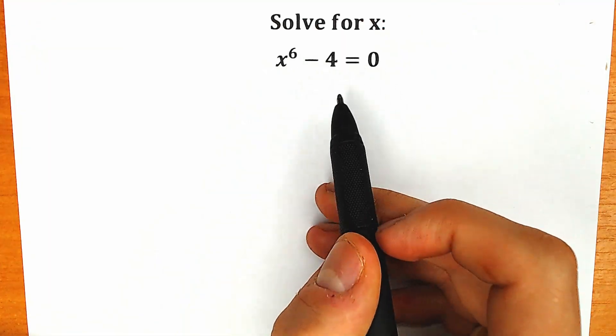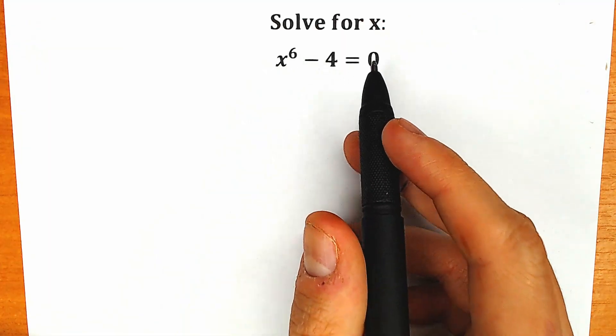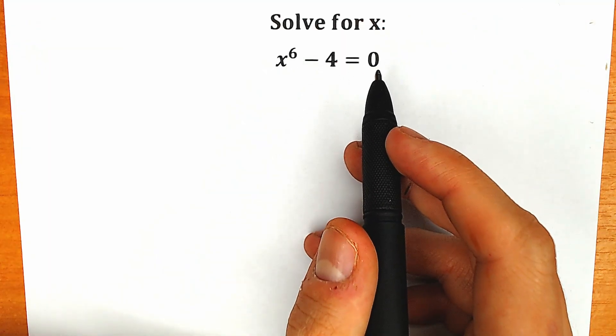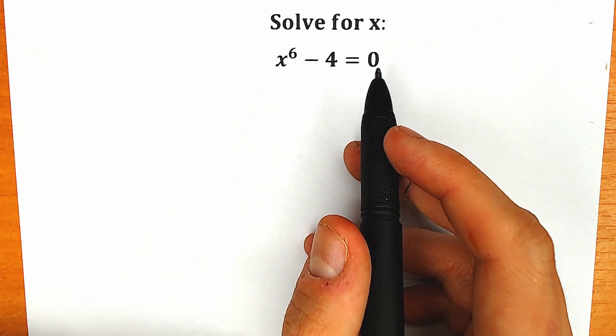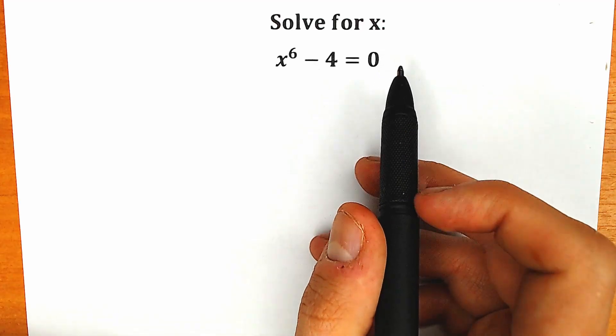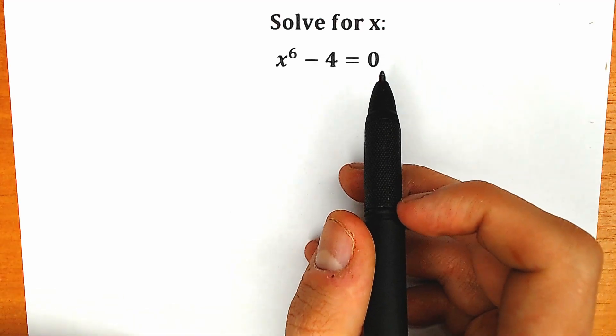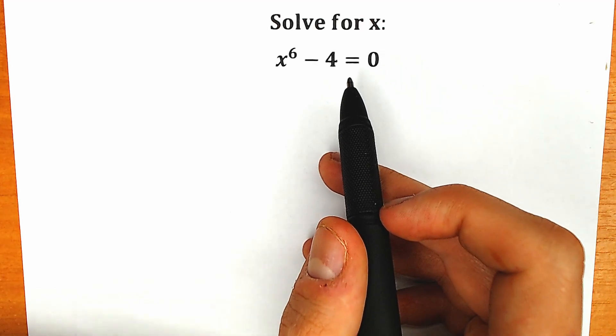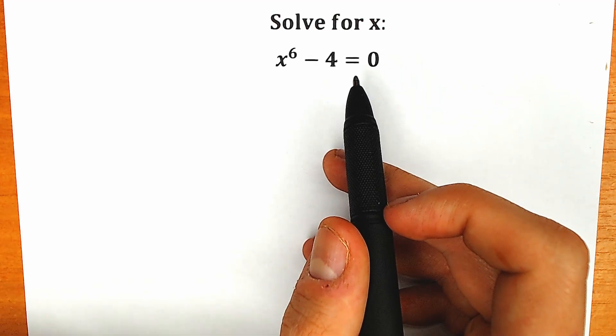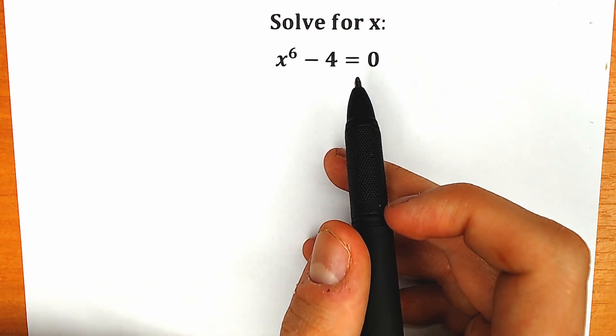x to the sixth power minus 4 equals 0, and we need to find x. If you have your solution, you can write it down in the comment section. We will check our answers here in just a few minutes, so it will be really interesting.